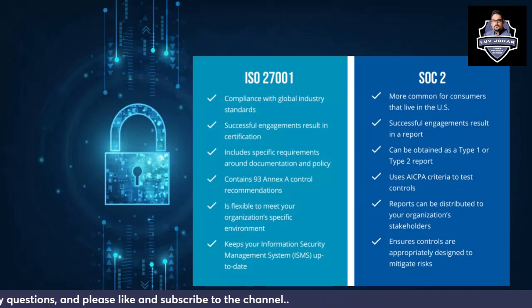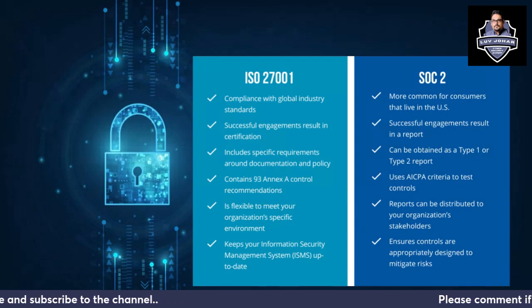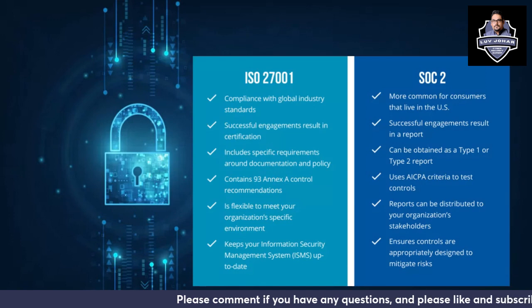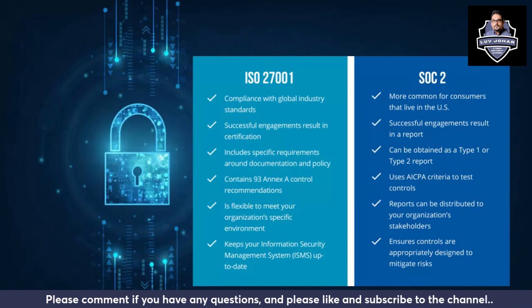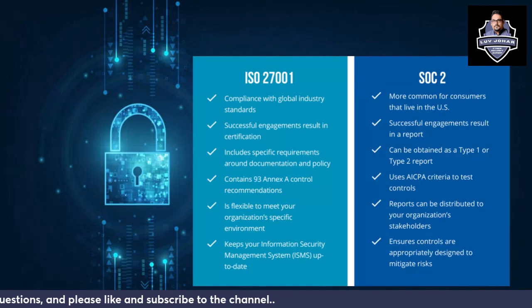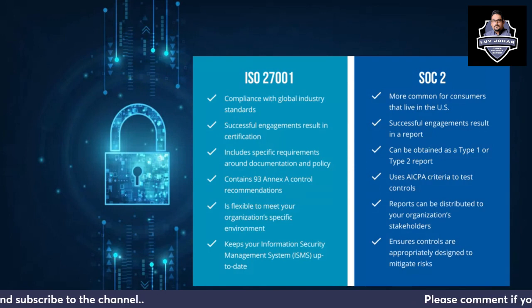SOC 2 is more common for consumers in the US. A successful engagement results in a SOC 2 report, which can be obtained as Type 1 or Type 2. It uses AICPA criteria — Trust Services Criteria and Trust Services Principles — to test the controls. Reports can be distributed to your organization's stakeholders and ensure controls are appropriately designed to mitigate risks.